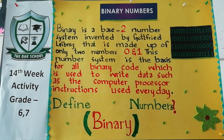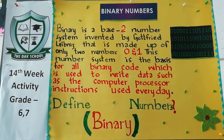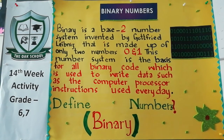Binary basically 2 numbers per mustamil hai. This number system is binary code which is used to write data. Data ko likhne mein computer process ko instruction deta hai.